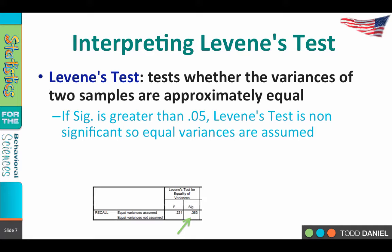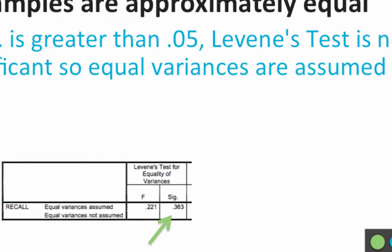If the significance of Levene's test is greater than 0.05, then the test is non-significant and we can assume equality of variances. Levene's test is testing that the variances are approximately equal — that's what we want to be the case. The null hypothesis for Levene's test is that the variances are the same — that there is no difference in variance between the two groups. If there is no significant difference, that is a non-significant result, which is what we want. So when interpreting Levene's test, we like it when the result is non-significant, meaning equality of variances can be assumed.